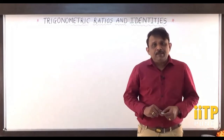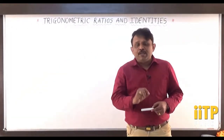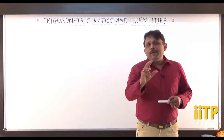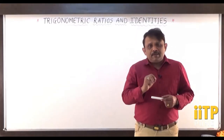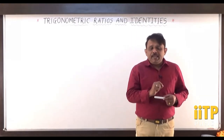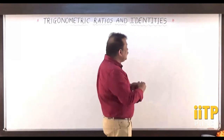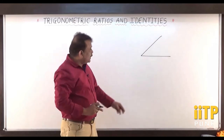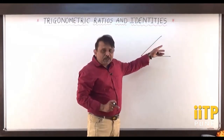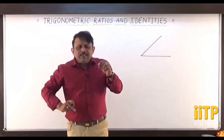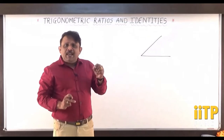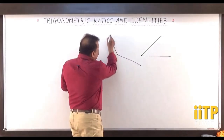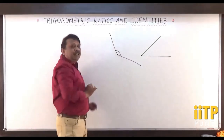The next topic is trigonometric ratios and identities. Before going into that, what do you mean by angle? The basic definition of angle from geometry is the union of two non-collinear rays. If I consider one ray here and another ray here, whatever is formed is the angle. The measure of the angle is always restricted between 0 and 180 degrees, no matter which lines you join.